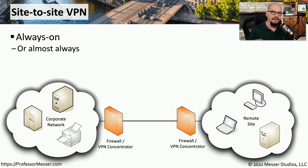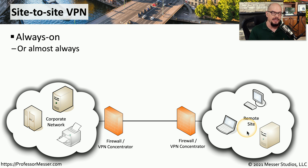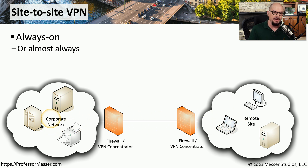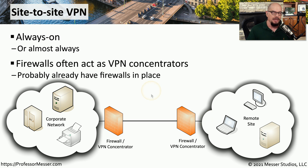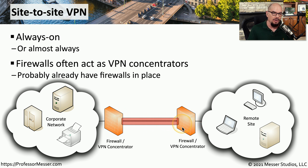A site-to-site VPN works a little bit differently. We might have a corporate network and a remote site, and we would like all communication between those sites to be encrypted over a VPN. This would be a configuration set to always be on, because there would never be a time when you would not want to secure the data between those locations. Often, the firewall is used as the VPN concentrator on both sides, creating an encrypted tunnel between those two firewalls.